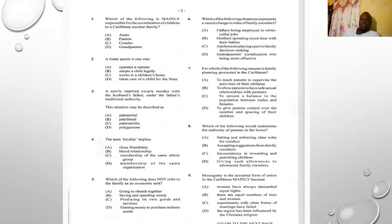Number five: which of the following does NOT refer to the family as an economic unit? A) going to church together, B) saving and spending wisely, C) producing its own goods and services, D) earning money to purchase basic needs. Once you see 'economic,' it involves the exchange of money. Options B, C, and D all involve money, so the answer is A) going to church together.